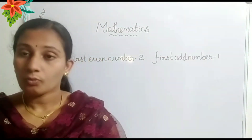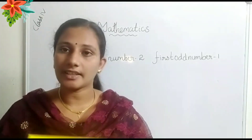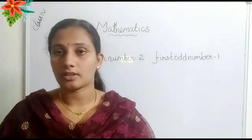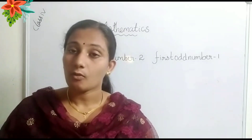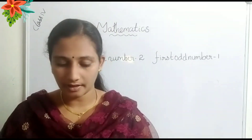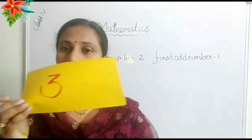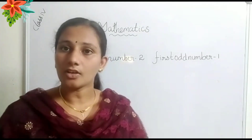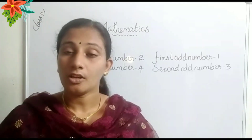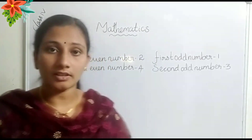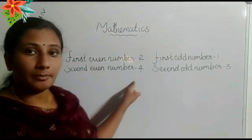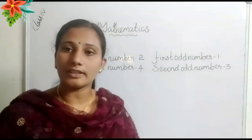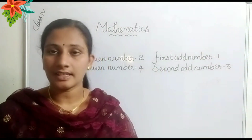Then what is the second even number? The second even number is 4. Then what is the second odd number? The second odd number is 3. So let us write here: second even number is 4, second odd number is 3.